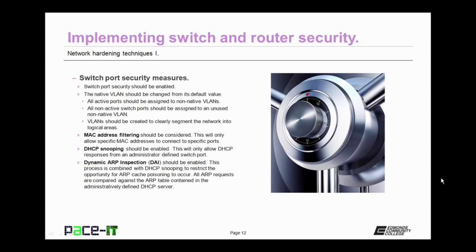DHCP snooping should be enabled, which will only allow DHCP responses from an administrator-defined switch port, meaning all DHCP responses will come from the same port. In addition to DHCP snooping, dynamic ARP inspection, or DAI, should also be enabled. This process is combined with DHCP snooping to restrict the opportunity for ARP cache poisoning to occur. All ARP requests are compared against the ARP table contained in the administratively defined DHCP server. Implementing these measures will greatly increase the security of your switches.